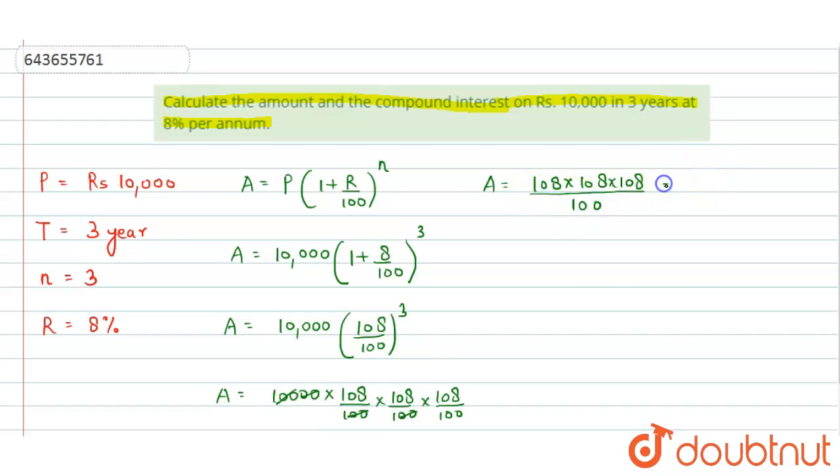After solving this calculation, we get 1,259,712 divided by 100, which equals Rs. 12,597.12.